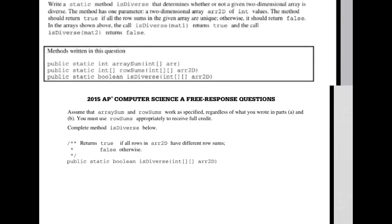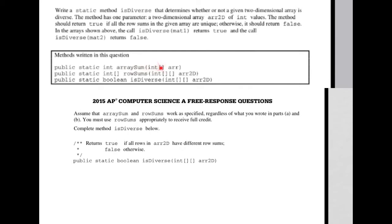We don't have to use array sum because we already used it. We do need, it tells us here, you must use row sums, which returns, if we remember from the other problem, the sum of the rows in a 1D array. So it has the, like if we had boxes, the sum of the first row is in one box, the sum of the second row is in the next one, and then the third one, and then the fourth one. It's for all of the rows in the 2D array.